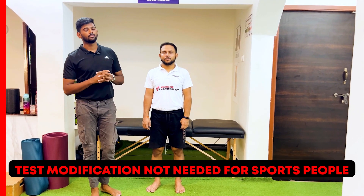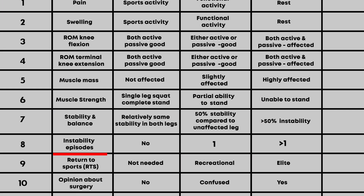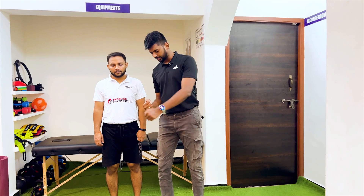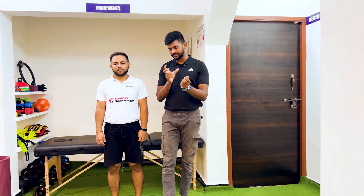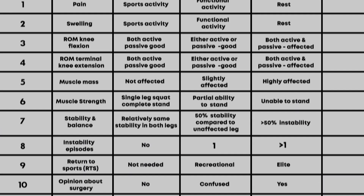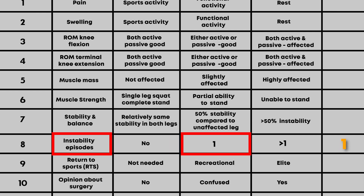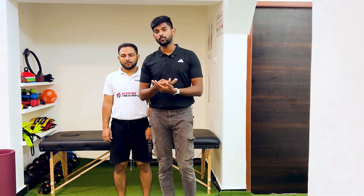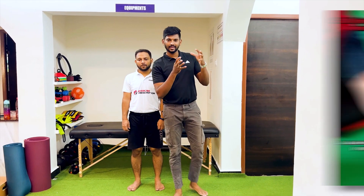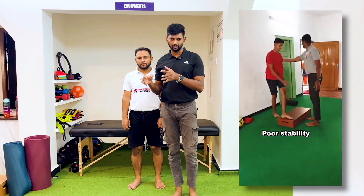The eighth point is instability episodes. Ask the patient how many times they have experienced instability — for example, feeling the leg gave way, a pop sound, locking, or being unable to extend the leg. If one or more instability episodes occurred, score two. If only one episode, score one. If no instability, score zero. Recurrent giving-way episodes can cause more severe problems, and higher grades of injury tend to correlate with more instability.